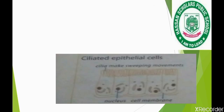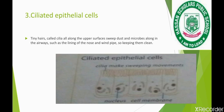The third type of specialized animal cells are the ciliated epithelial cells. These have tiny hair-like structures present in delicate organs to sweep dust and microbes along the surface, such as in the nose and windpipe. Along these structures, tiny hair-like cilia sweep dust particles and microbes.